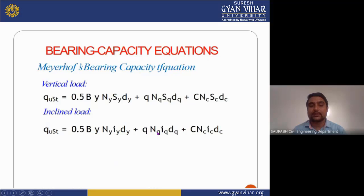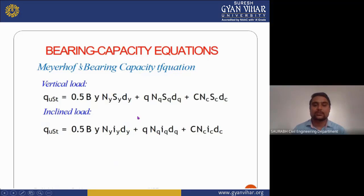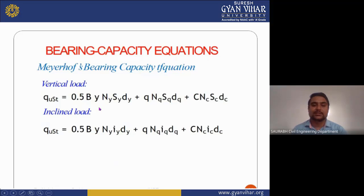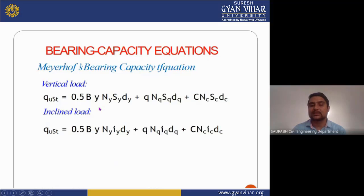Here is the formula for calculating bearing capacity after Meyerhof. For vertical load: Q-ust = 0.5 × B × gamma × N-gamma × S-gamma × D-gamma + Q × N-Q × S-Q × D-Q + C × N-C × S-C × D-C. For inclined load: Q-ust = 0.5 × B × gamma × N-gamma × I-gamma × D-gamma + Q × N-Q × I-Q × D-Q + C × N-C × I-C × D-C.